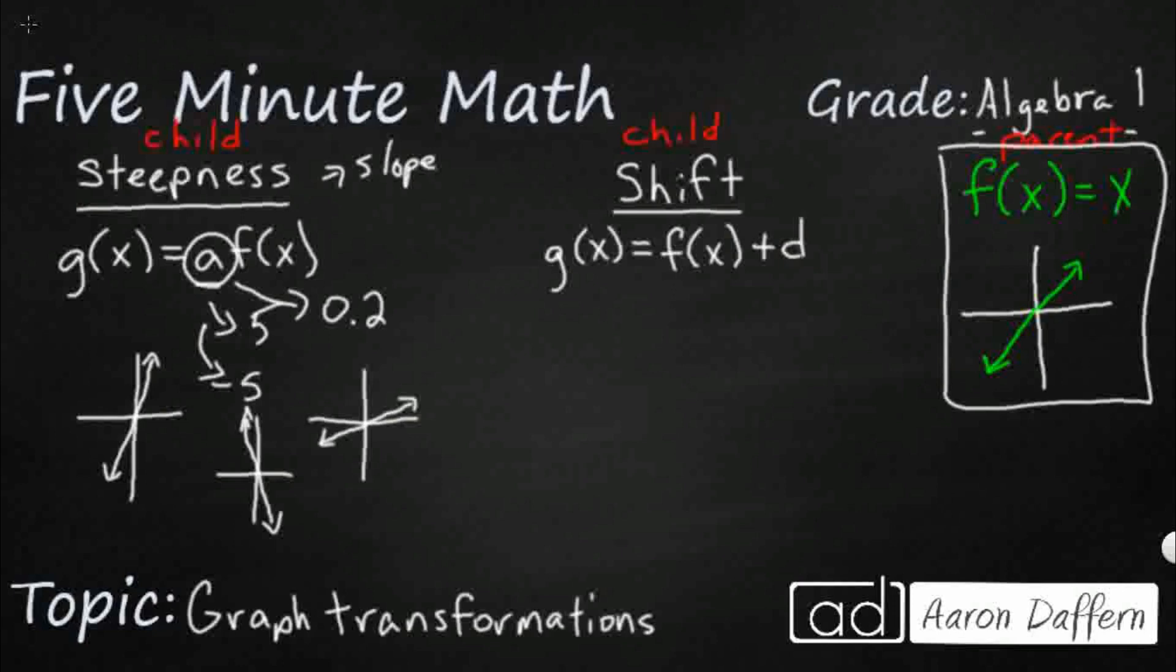Now that's what happens if we mess with the multiplier on the outside of the parent function. What happens if we just add something, just add a constant to the end of a function? Well, in this child function here, this plus d, you notice this looks a little bit like our slope-intercept form.